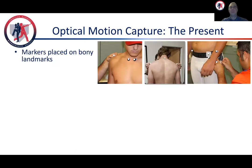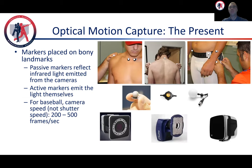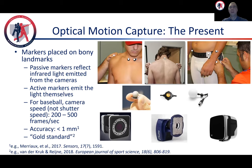So what is the current state of optical motion capture? Typically, markers are placed on bony landmarks all over the body, whether they are passive or active markers. The multi-camera setup then sees light from them and determines their location in 3D space. Current accuracy levels of these systems are below one millimeter of error, and you commonly hear these systems described as the gold standard in motion capture.